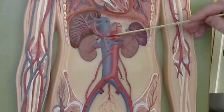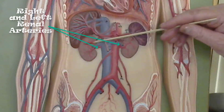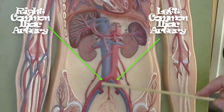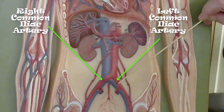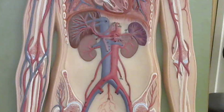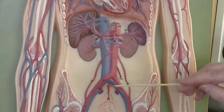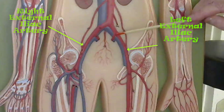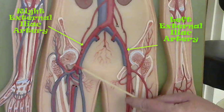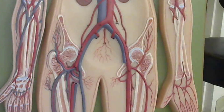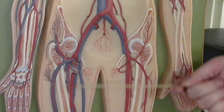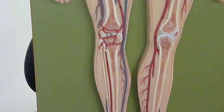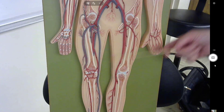The abdominal aorta has branches that are going to branch off to the kidneys, and these are the renal arteries. The abdominal aorta is going to bifurcate to form the right common iliac artery and the left common iliac artery. The common iliac arteries bifurcate to form the internal and external iliac arteries. Here is the left internal iliac artery and the left external iliac artery, and this is the right external iliac artery. The external iliac arteries leave the abdominal pelvic cavity and travel into the femoral region, or thigh region, to become the femoral arteries — the left femoral artery and the right femoral artery.